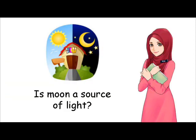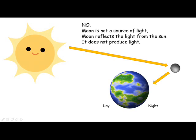Teacher has a question for you: Is the moon a source of light? At night time, we can see as if the moon is shining bright, and we can see better at night when there is a moon. So, is the moon a source of light? No — the moon is not a source of light. The moon reflects the light from the sun, but it does not produce light.